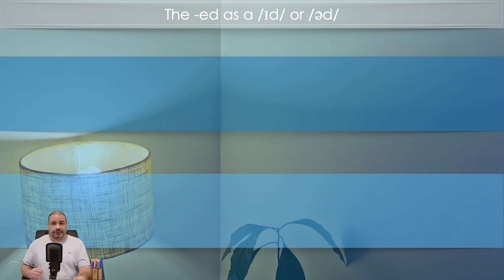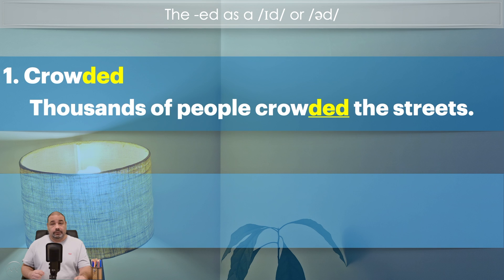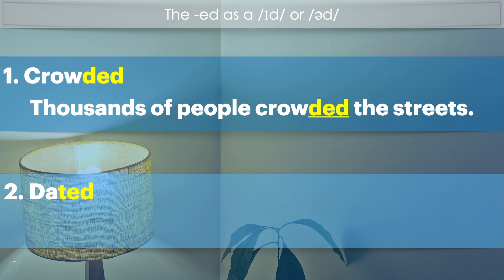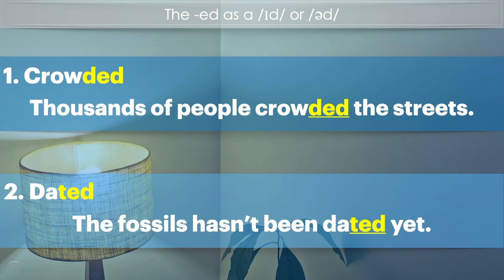Practice. Let's practice a little bit now. Number one: 'crowded' — 'crowded.' Thousands of people crowded the street. Number two: 'dated' — 'dated.' The fossils haven't been dated yet.